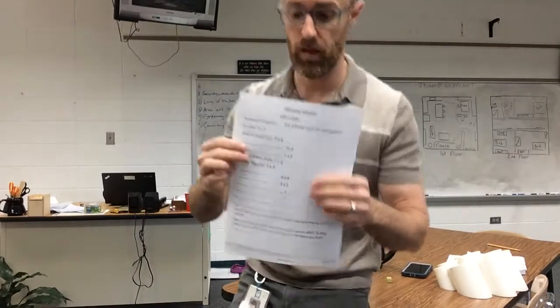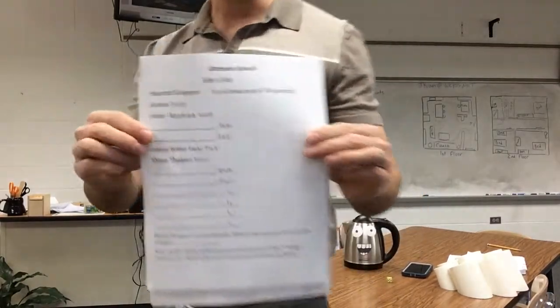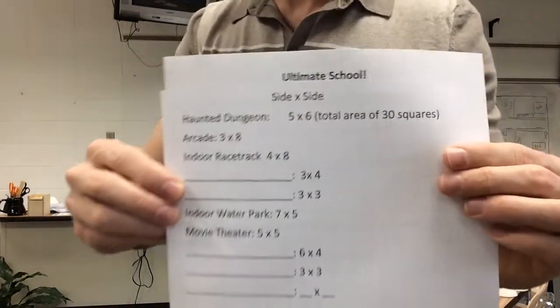Hey guys, Mr. Graham here. Teachers said third graders that perhaps a little review on area and perimeter would not be a bad thing, so this is what I've got for you this week. Check it out — the ultimate school! This is coming home with some graph paper. Very simple: you're gonna build the ultimate school.